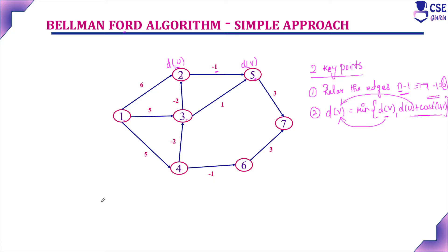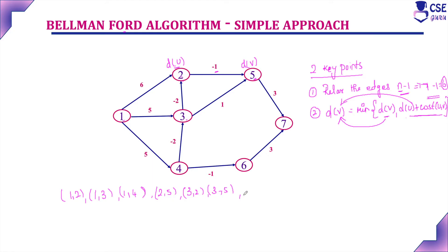For this simple approach, first we consider the edges given in the graph in vertex order. Edges are: 1 to 2, 1 to 3, 1 to 4 — then 2 to 5 — then 3 to 2 and 3 to 5 — then 4 to 3 and 4 to 6 — then 5 to 7 and 6 to 7. Totally there are 10 edges.